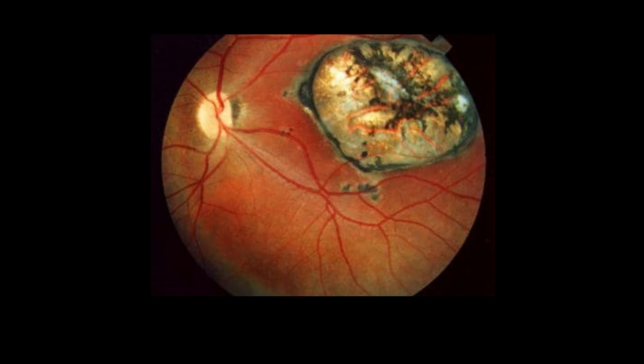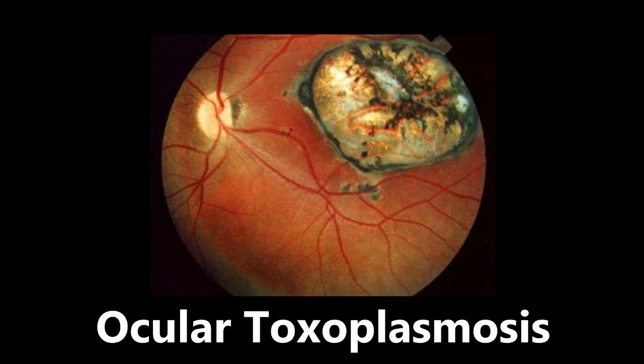First image here — we're doing fundoscopy and what we are seeing is ocular toxoplasmosis. This is a toxo infection that has affected the eye. The main feature we're looking at is this discolored, blackened, yellowish area, which is a retinochoroidal scar. One of the symptoms is that it can cause blindness — it causes inflammation, chorioretinitis, and this retinochoroidal scar. Be sure to commit this one to memory. Nothing else looks like this — if you see it, it's ocular toxoplasmosis.